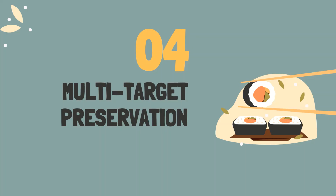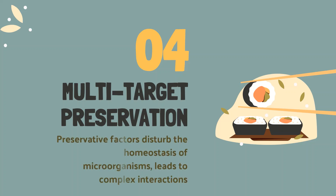The last one is multi-target preservation. Multi-target preservation is done by the preservative factors which disturb the homeostasis of microorganisms, so the microorganisms cannot overcome the hurdles which are present in the food product. This is due to the different complex interactions of various factors.